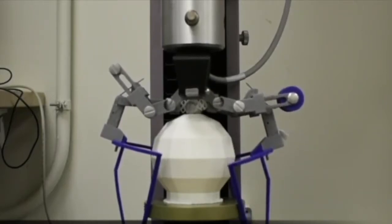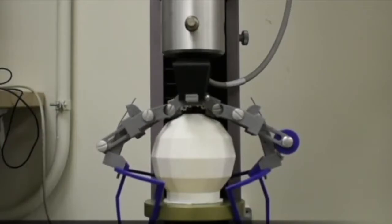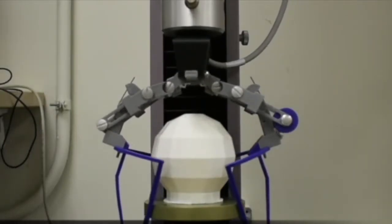Contact with the object causes the bistable mechanism to snap through. As it does, the linkage that is co-linear with the springs rotates, which causes hooks to enclose the object.